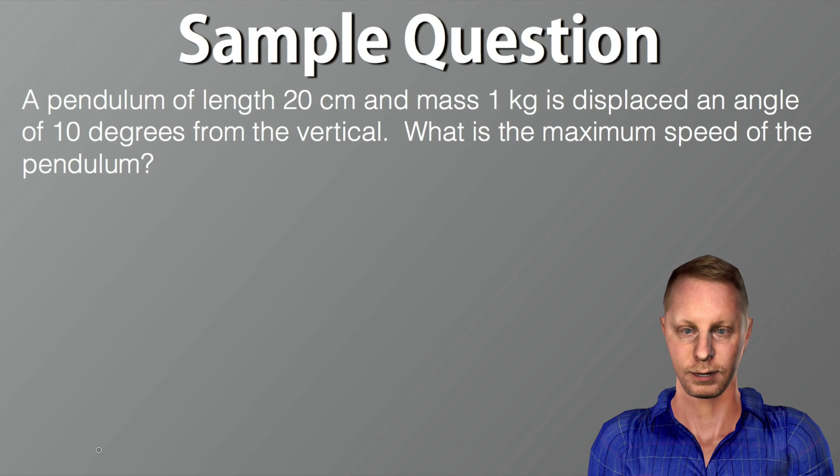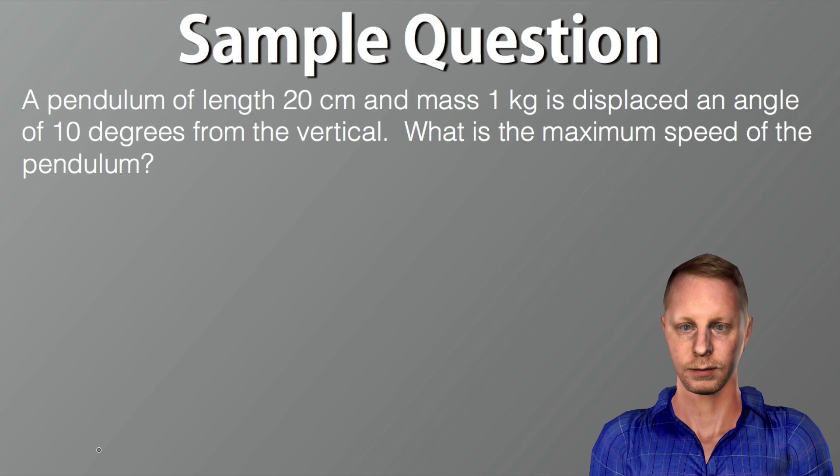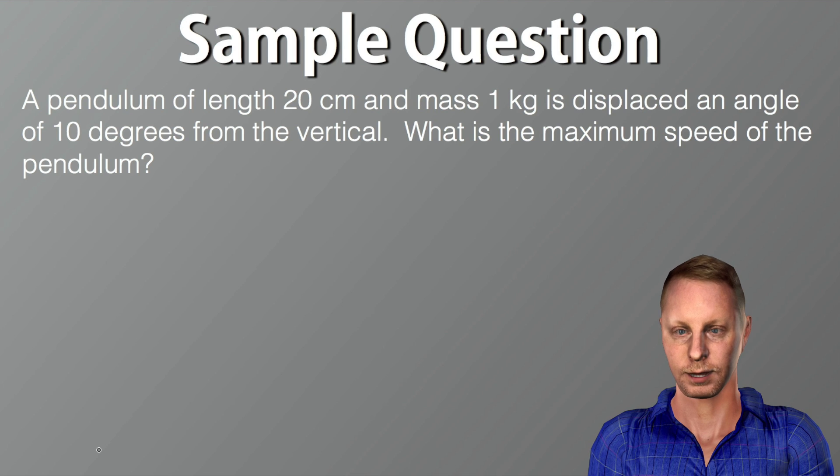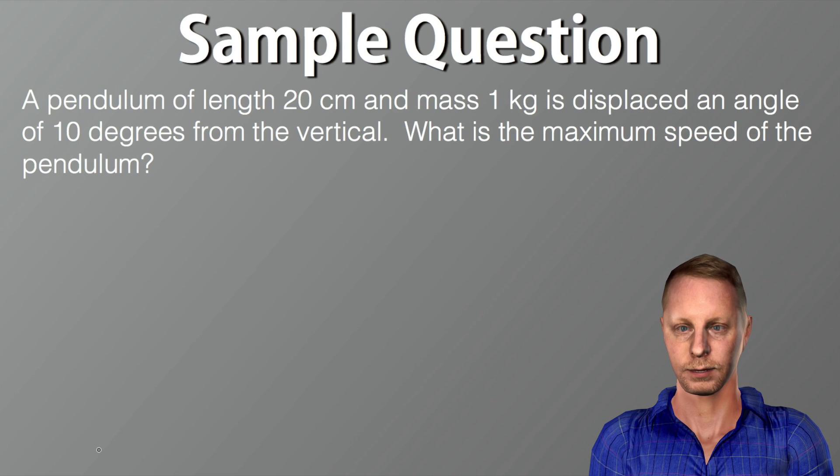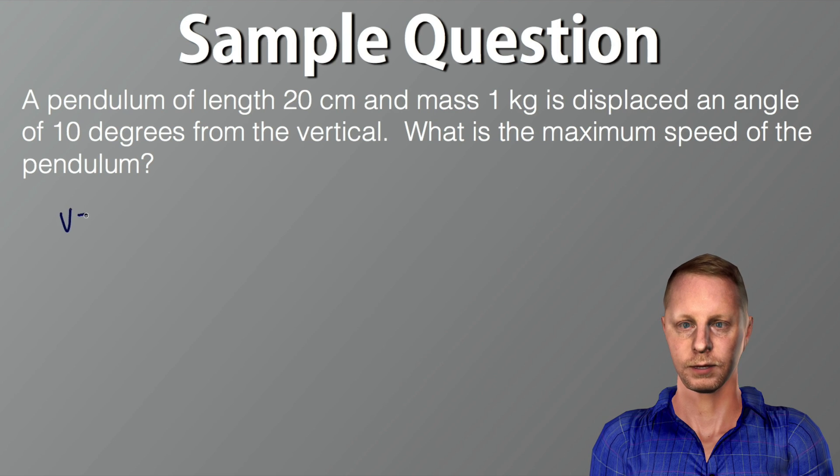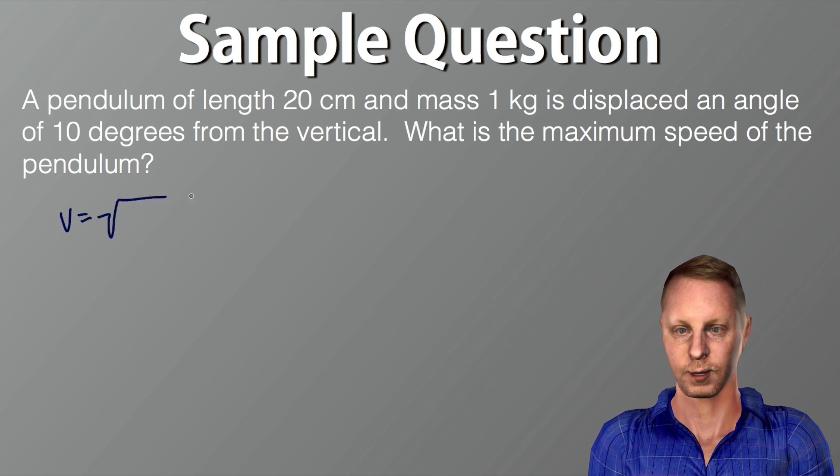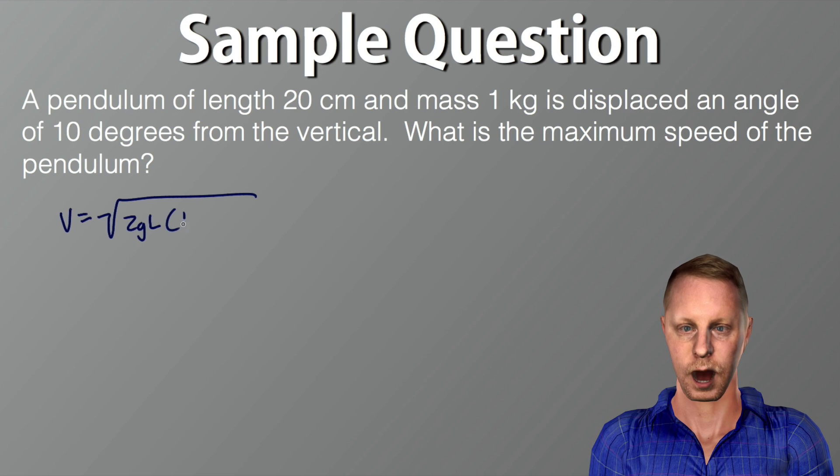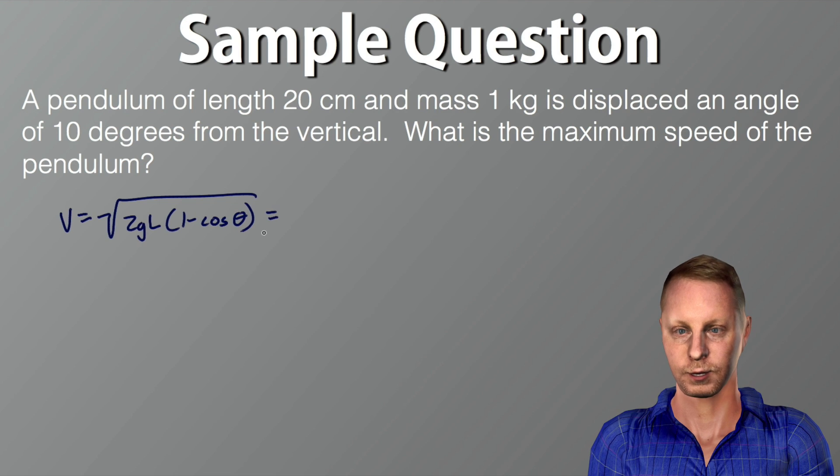All right, let's take a look at another one. A pendulum of length 20 centimeters and mass 1 kilogram is displaced an angle of 10 degrees from the vertical. What is the maximum speed of the pendulum? All right, this sounds like a conservation of energy question, where we looked at before and we said we could find the maximum speed of the pendulum at the lowest point by looking at the change in height of the ball on the pendulum, the mass itself. And when we did that previously, we found that the velocity, the maximum velocity, was the square root of 2gl times the quantity 1 minus cosine of theta.